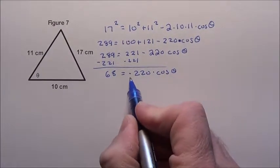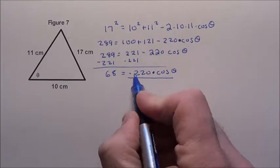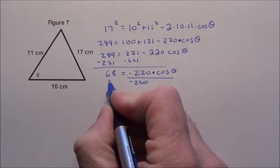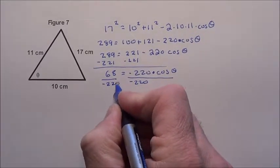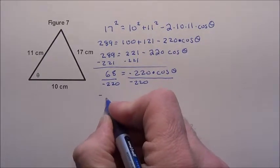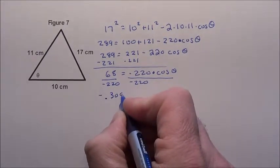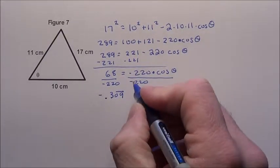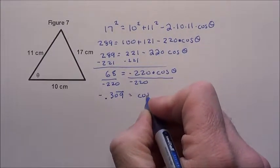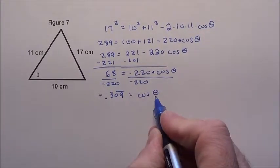We're almost there. I just got to now get rid of that multiplying by negative 220. I divide by it. When I do this, I get negative .309 repeating is equal to the cosine of theta. How do you get theta by itself now?